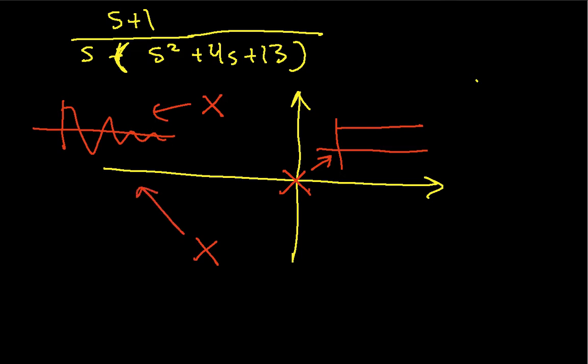But, you'll also notice I have in the numerator this term, s plus 1, which means that this function goes to 0 at a value of minus 1. So, to represent a 0, I use a 0. To represent poles, I use x's. Now, knowing that this thing goes to 0 at minus 1, you might be asking yourself, so, what sort of time waveform does this correspond to? And, the answer is, it doesn't actually correspond to a time waveform.